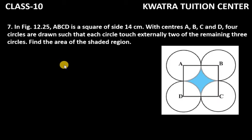Hello everyone, let's start with question number 7 of exercise 12.3. So this says in figure ABCD is a square of side 14 centimeter.